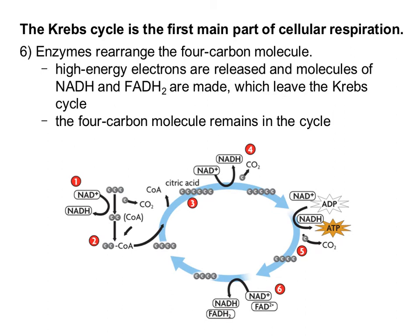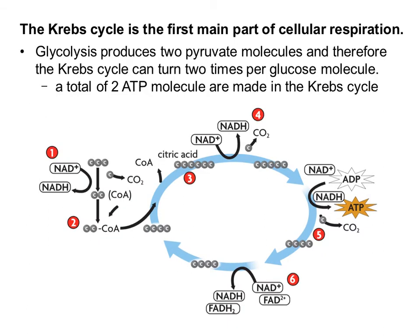In step six, we're rearranging this four-carbon molecule into another four-carbon molecule, and in doing so we're able to extract more electrons and produce both NADH and FADH2. That four-carbon molecule remains in the cycle so that it can catch the next acetyl CoA coming in. Since glycolysis produced two pyruvate molecules, the Krebs cycle turns two times per glucose molecule — that's why we get a total of two ATP molecules made in the Krebs cycle.